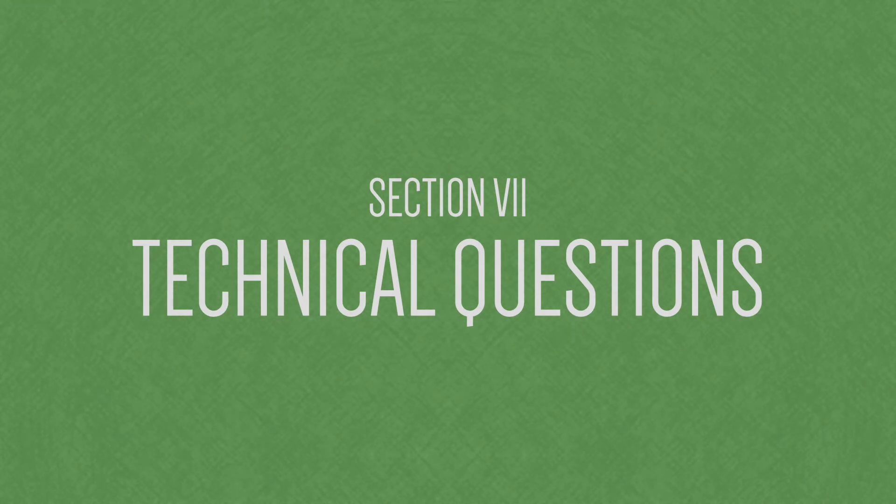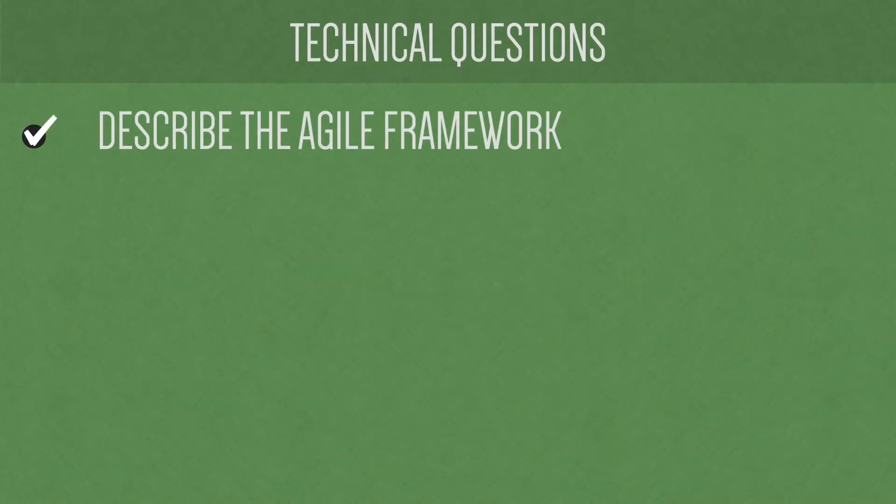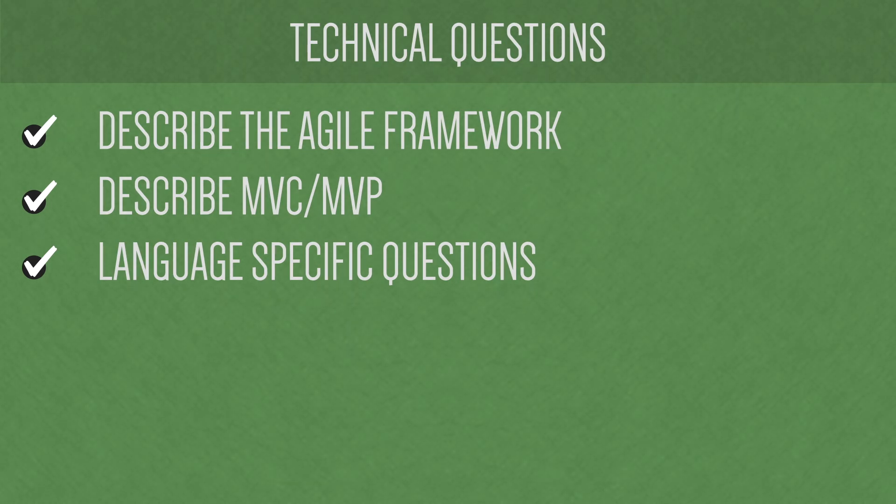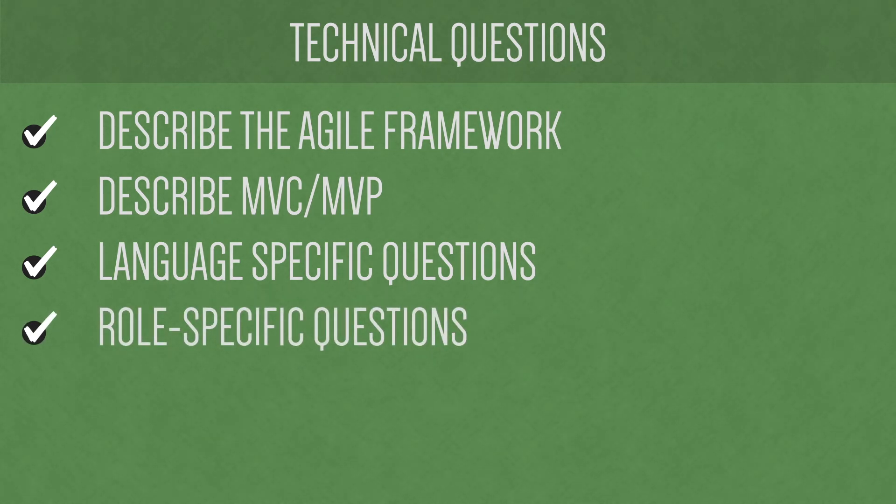Next is technical questions. This depends on the job you apply for — you'll face different questions accordingly. Some might include: describe the agile framework; describe MVC or MVP (model-view-controller and model-view-presenter); language-specific questions, so if you claim expertise in C++ be ready for C++ questions; and depending on your role, questions on networking, databases, or mobile development. A good way to think about it is what they could ask you in a phone interview to assess whether you actually know what's on your resume.